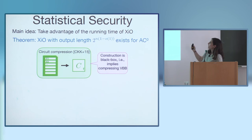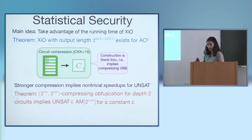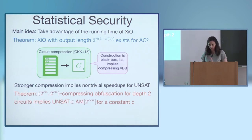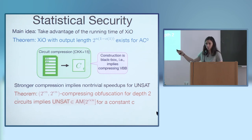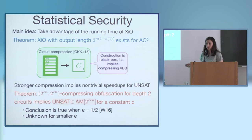We show that you can't do much better than this. This is a construction of XIO with polynomial 2-to-the-n running time but bounded output length. If we look at stronger compression for strong XIO — where both running time and output length are bounded — we can get a compressing obfuscator. Such a compressing obfuscator implies that co-SAT has an AM protocol where the verifier runs in time 2 to the epsilon n, and the message from the verifier is this length. This is an interesting conclusion because it's actually sometimes true — specifically when epsilon is a half — so we don't rule out compressing obfuscation when this holds. But it's possible it would be false for smaller epsilon, which would rule out such a compressing obfuscator.